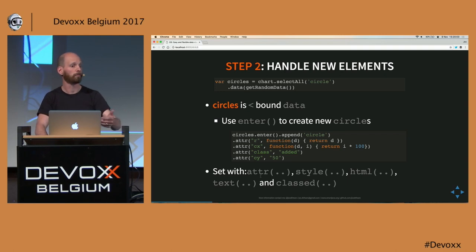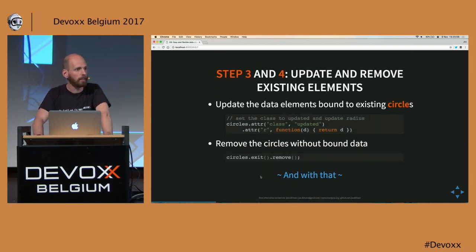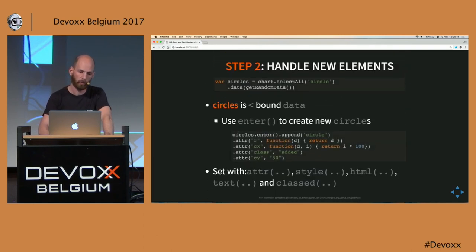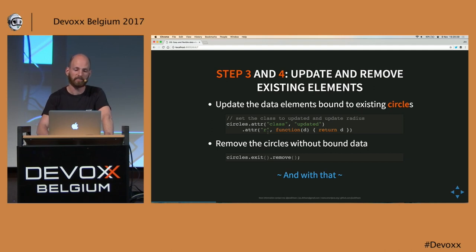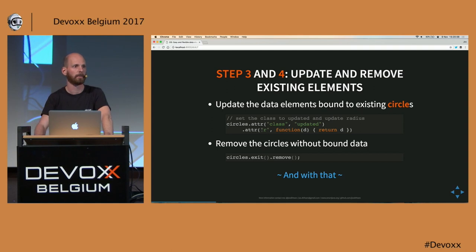So the first time we create five new elements. The next step is when we already have elements on screen — you can use the selection as is. Based on the variable holding the selected circles, we can now update all the elements already on screen. In this case, we just change the class to 'update' and, since the data in our array might have changed, we also update the radius.